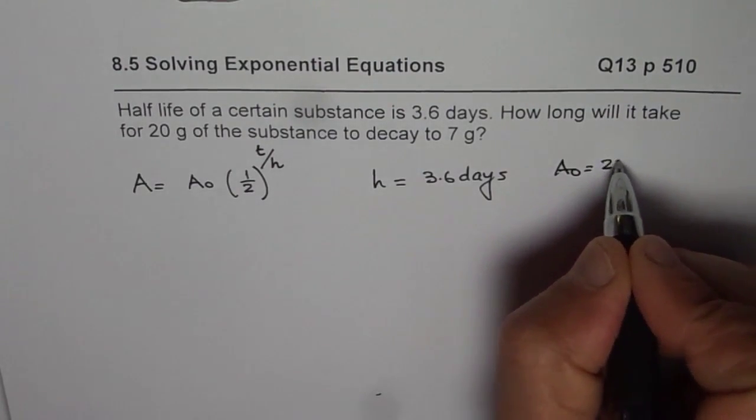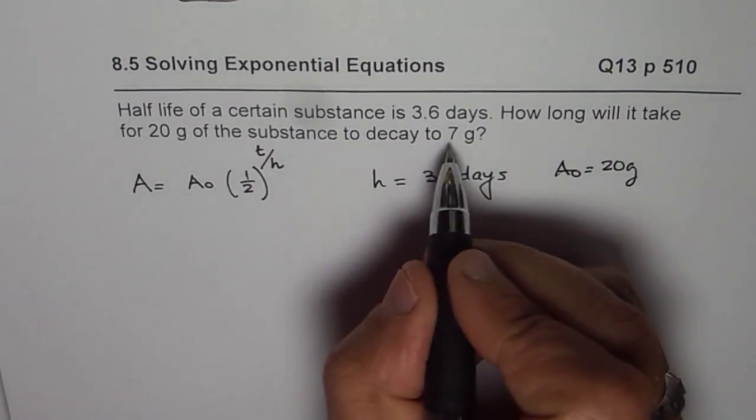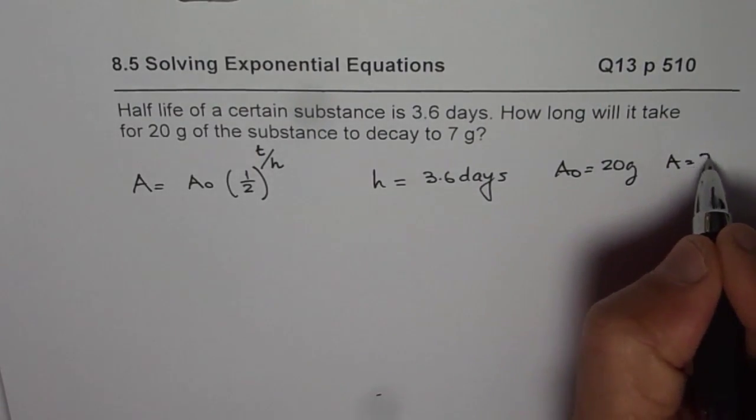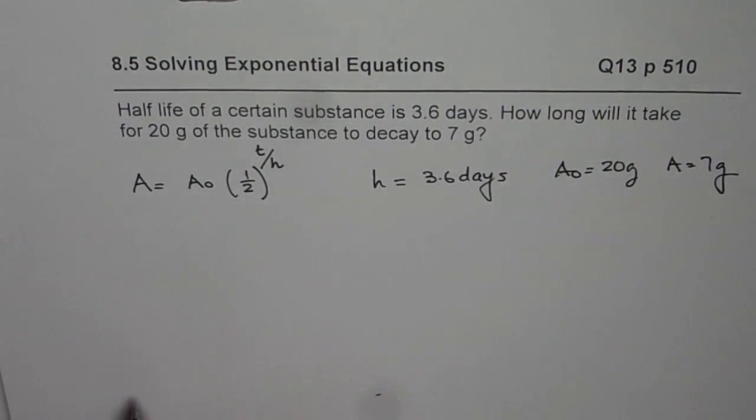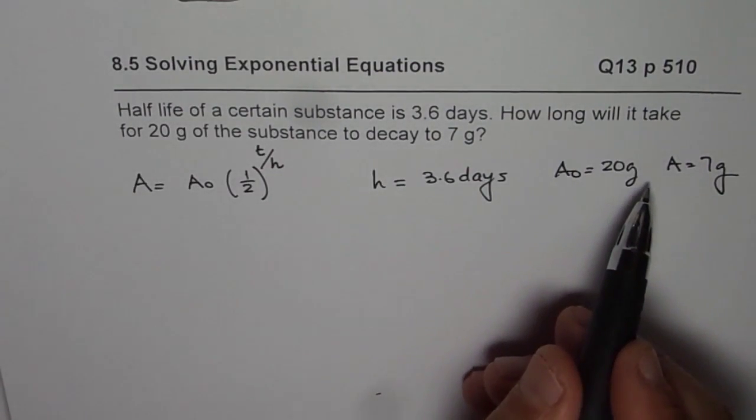So A0 is 20 grams and we are also given the final amount, which is 7 grams. We need to find t from this given equation. So we can substitute these values and then find it out.